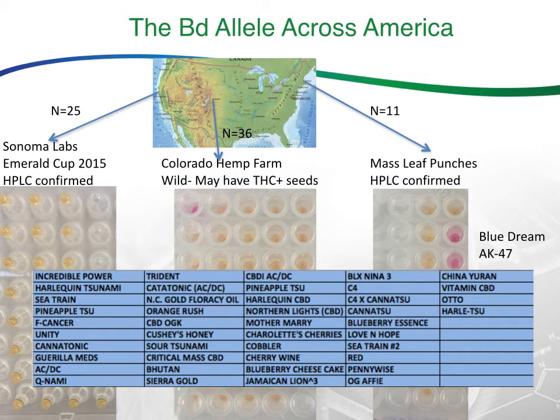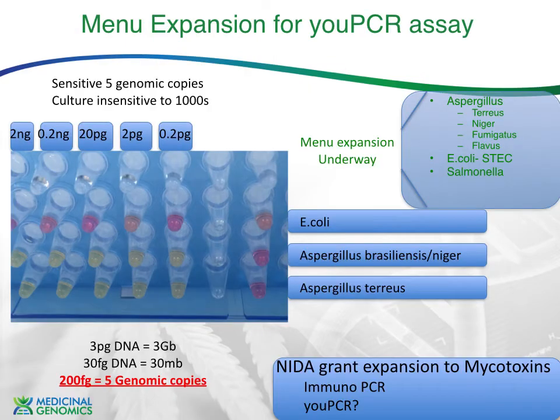There are obvious extensions from this. If you can do plus-minus tests on cannabis genetics, why not look for things that might kill people? We're looking at aspergillus, E. coli, STEC, and salmonella — all addressable with this platform. We're validating all of them down to five genomic copies per test, and it seems to have that sensitivity so far with aspergillus, E. coli, and STEC. We also have a NIDA grant to expand this to mycotoxins — initially probably quantitative PCR with an immuno-PCR approach, but it may also be amenable to UPCR.